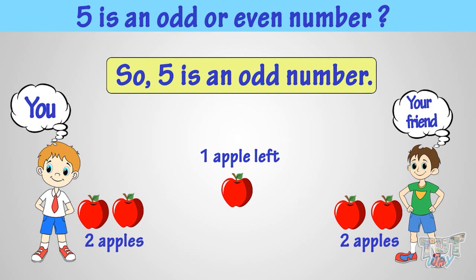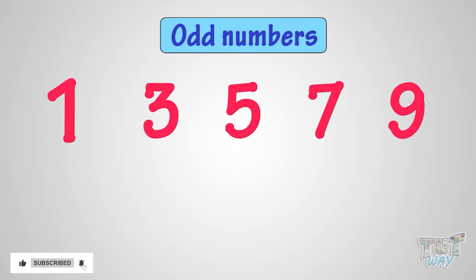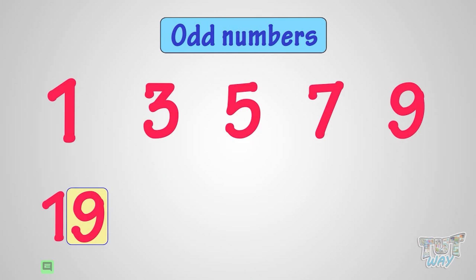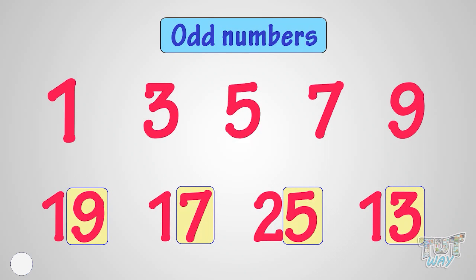Now, don't forget. 1, 3, 5, 7, and 9 are odd numbers. And all numbers ending with them, like 19, 17, 25, and 13 are odd numbers.